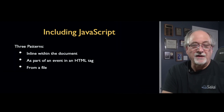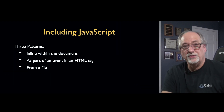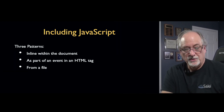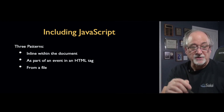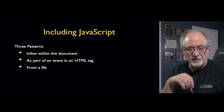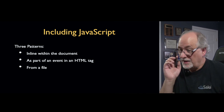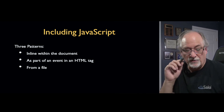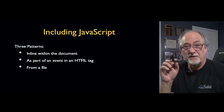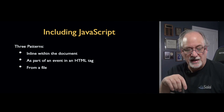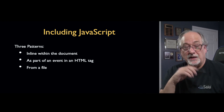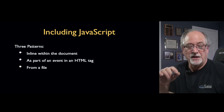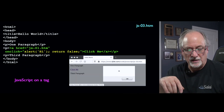There are three ways to get JavaScript into your web page. One is inline in the document — that's what I just showed you, with a script tag and a closing script tag. It can be part of an event in an HTML tag. Or you can put the JavaScript in its own file, usually ending in .js.